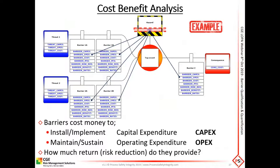Moving forward beyond LOPA, there are some really powerful functionalities in the BowTie Excel plugin. The first is cost-benefit analysis. If you have a consequence with a particular commercial impact — loss of production, equipment repair, fines, or loss in share price — you aim to minimize that by investing in barriers. Each barrier has a capital cost to implement and an operating cost to maintain, test, and inspect.